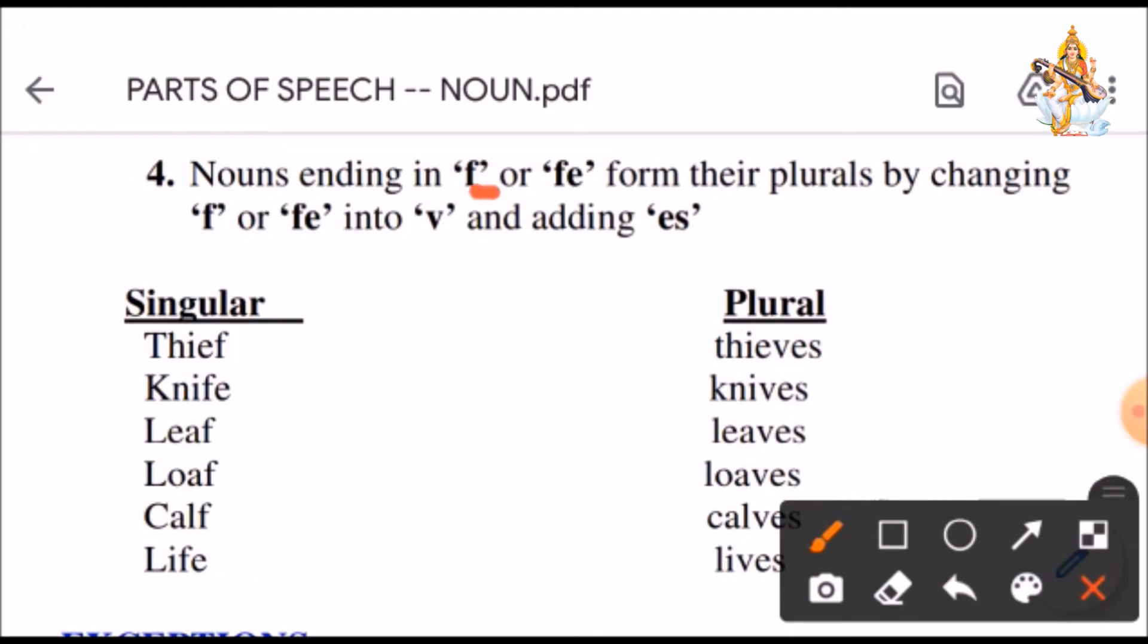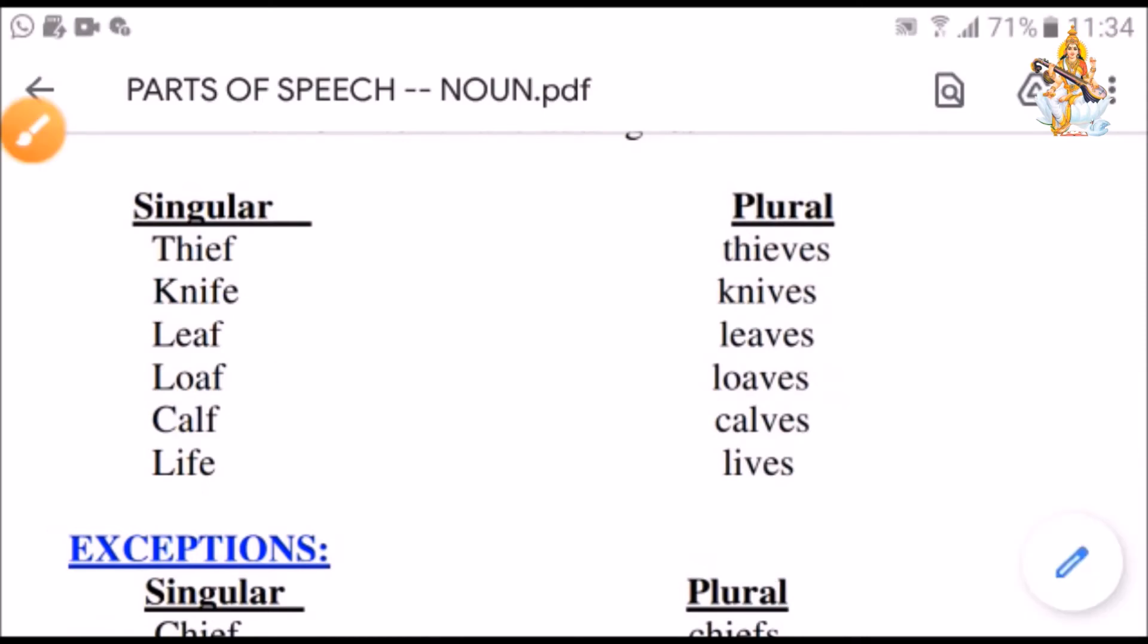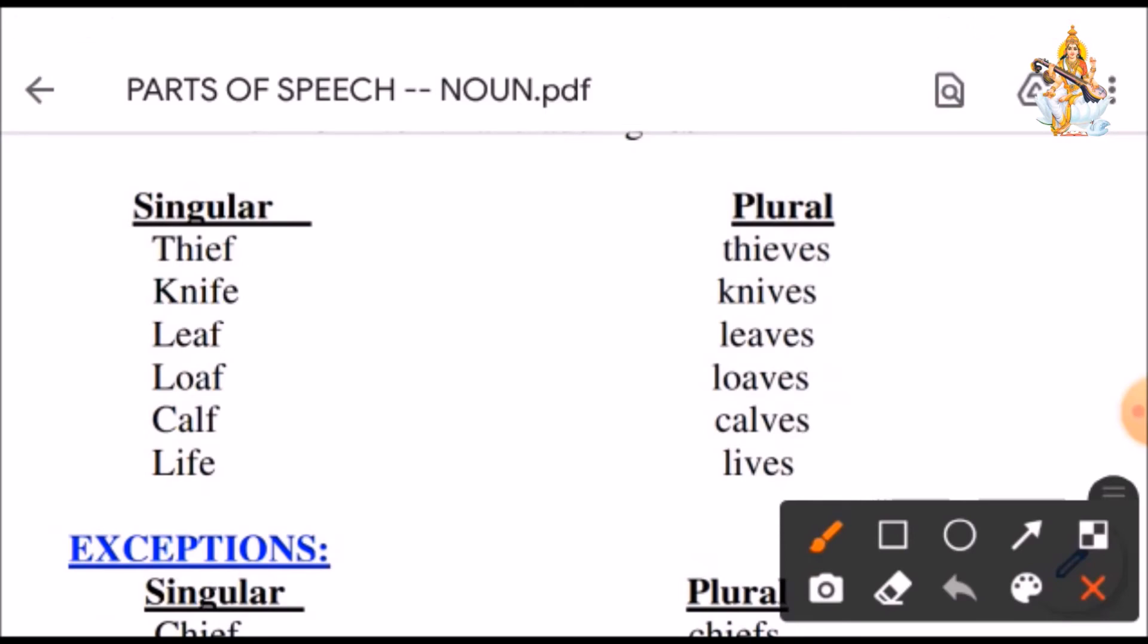All have got Y in the end, all have a consonant letter before them and we have converted Y into I and added ES to make them plural. Nouns ending in F or FE form their plurals by changing F or FE into V and adding ES. See the examples.